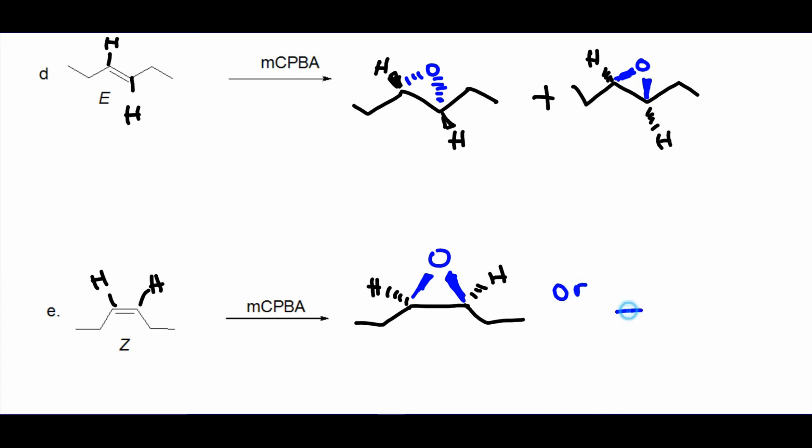In this case it's either or, so either this answer or this one. Why either or? Because again these two molecules have an internal plane of symmetry. See, you have an internal plane of symmetry so it can't be both of them.